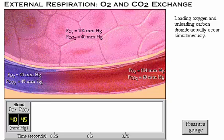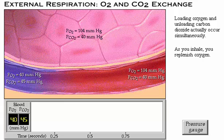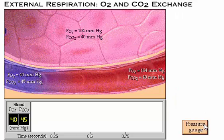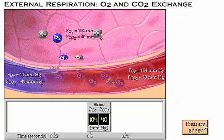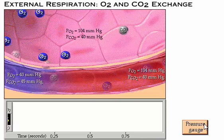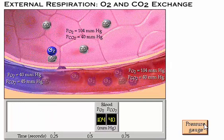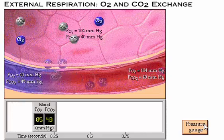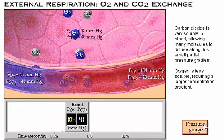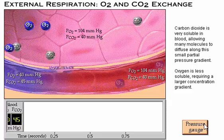Loading oxygen and unloading carbon dioxide actually occur simultaneously. As you inhale, you replenish oxygen, and as you exhale, you eliminate carbon dioxide. Notice how much smaller carbon dioxide's partial pressure gradient is than oxygen's. As Henry's Law states, the number of molecules which dissolve in a liquid is proportional to both the partial pressure and the gas solubility. Since carbon dioxide is very soluble in blood, a large number of molecules diffuse along this small partial pressure gradient.